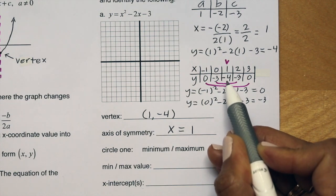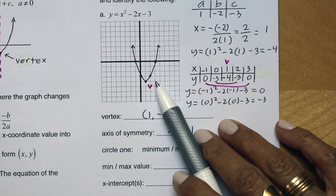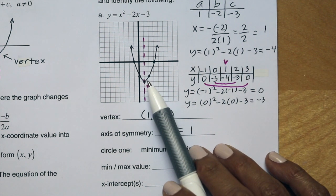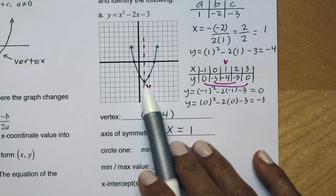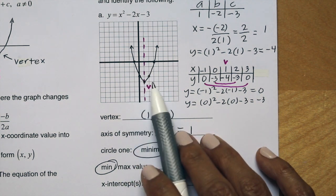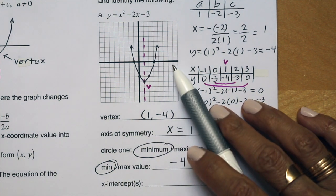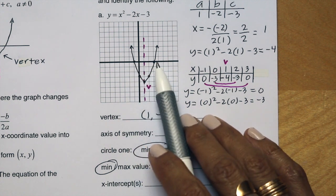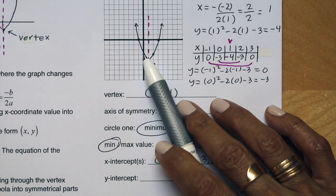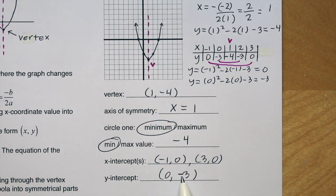Plotting all the points starting with the vertex at 1, negative 4, we get our parabola. The axis of symmetry is x equals 1, going through the vertex. The parabola opens up, so we have a minimum value. The minimum is the y-coordinate of the vertex: negative 4. The x-intercepts, where the graph crosses the x-axis, are at negative 1 and positive 3. The y-intercept, where the graph crosses the y-axis, is at 0, negative 3.